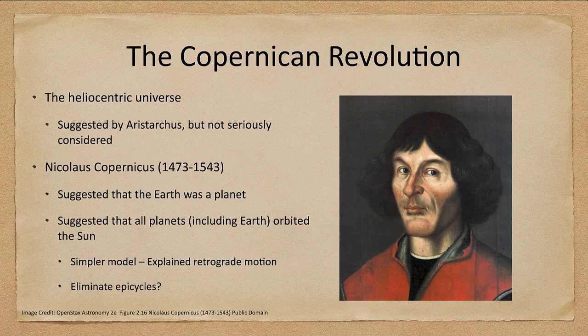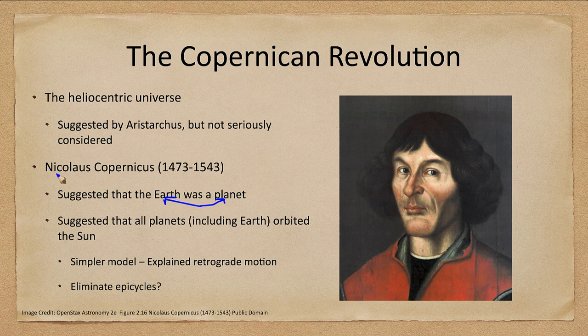It kind of starts with this gentleman — Nicholas Copernicus — the first modern astronomer to give us the suggestion that the Earth is a planet rather than the center of the universe. This switched us from the geocentric universe to the heliocentric universe. Aristarchus had suggested this earlier, but it was not seriously considered in early times.